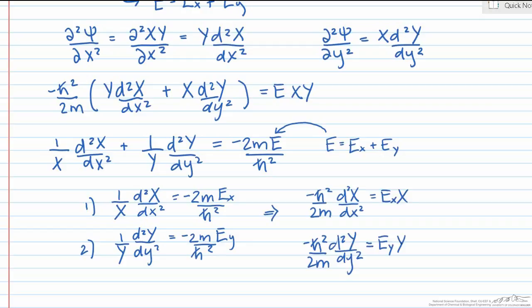We can rearrange these expressions slightly into the following forms, and now they should start to become familiar. These two ordinary differential equations are the same as the one-dimensional particle-in-a-box Schrödinger equation, and therefore we already know the solutions.